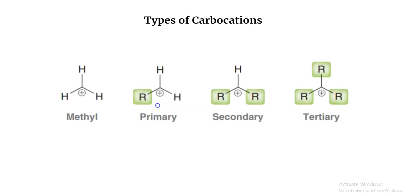The first reactive intermediate is carbocations. As the name suggests, these are cations — they have a positive charge — but the positive charge here is centered on the carbon. Whenever you have a methyl group CH3 with the carbon bearing the positive charge, that's called a methyl carbocation. Whenever you have a positive charge on a carbon connected to one other carbon, that's a primary carbocation. R here stands for an alkyl group, which could be methyl, ethyl, and so on.